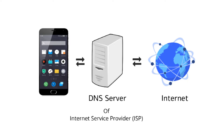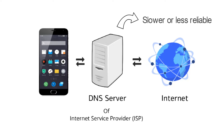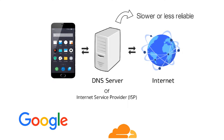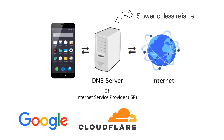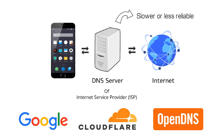By default, your Android phone routes all your connections using a DNS server provided by your ISP. But this might be slower or less reliable than certain DNS options, such as Google DNS, Cloudflare DNS, Open DNS, etc. For this reason, many people consider changing the DNS settings on their device.